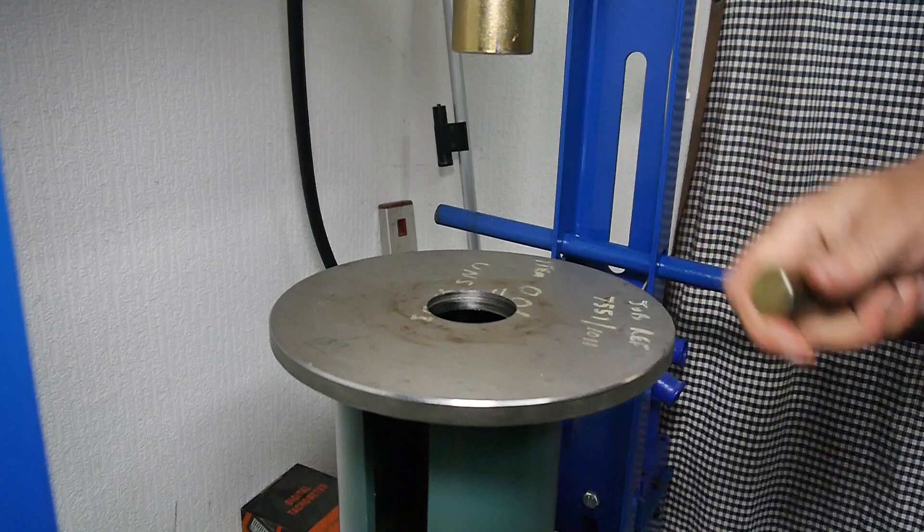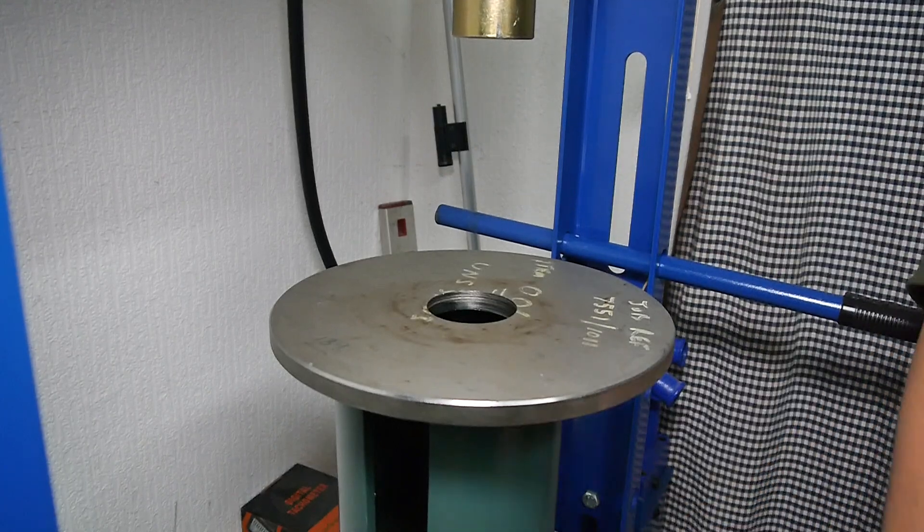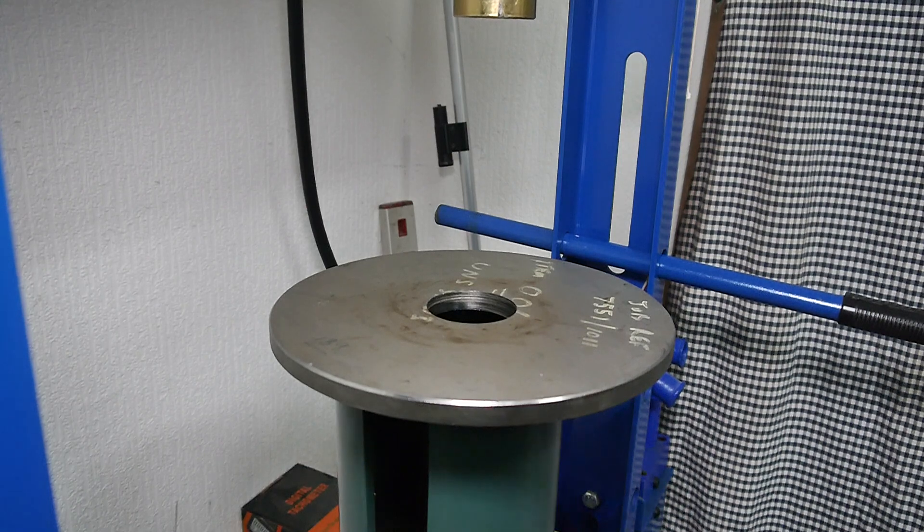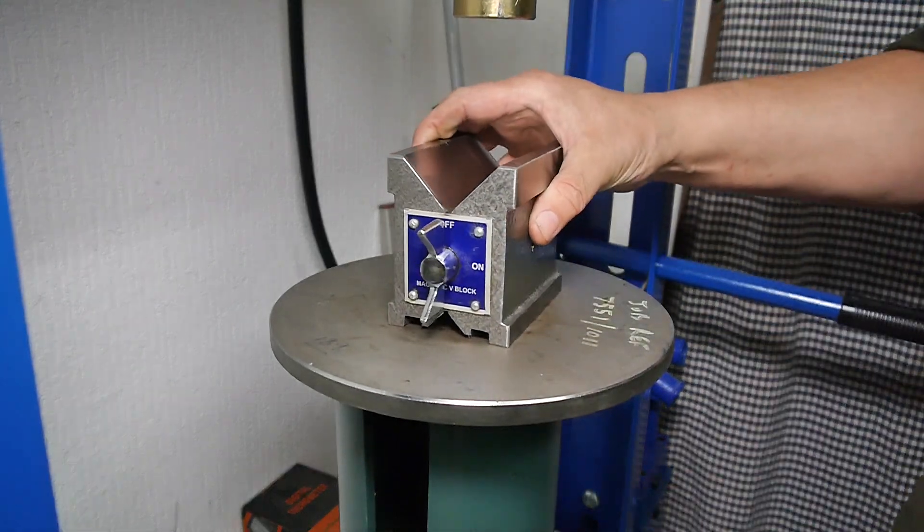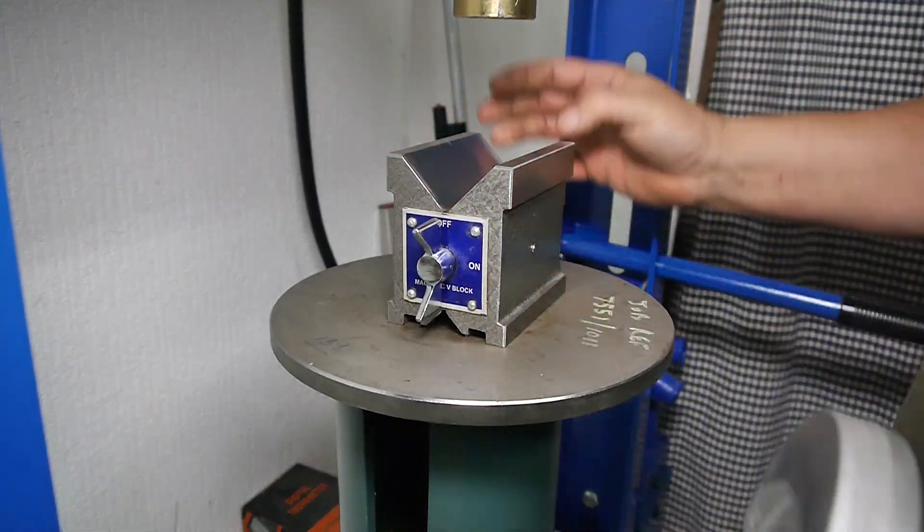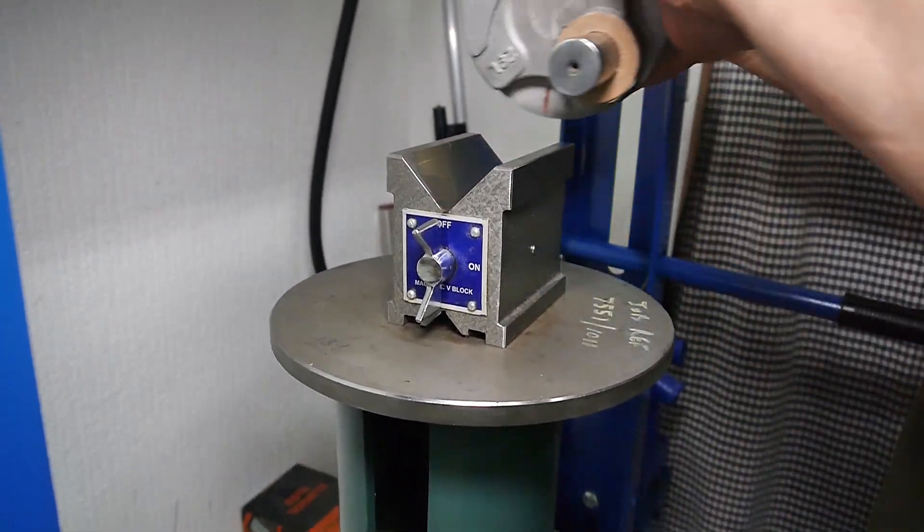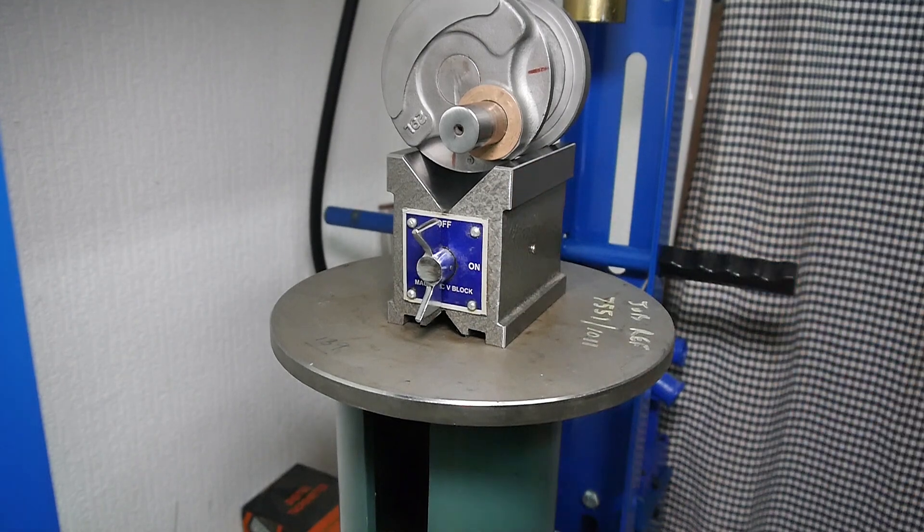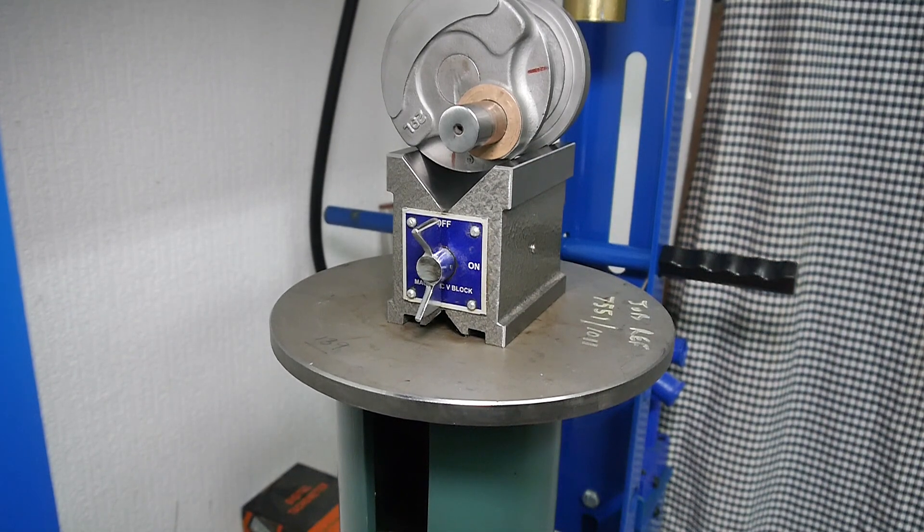Put the plate on, put a decent quality v-block, put the crankshaft on the v-block, and then with the end of a tungsten scribe...